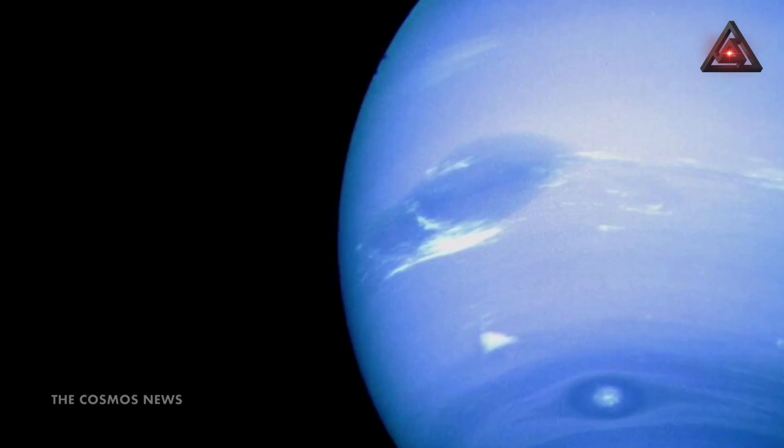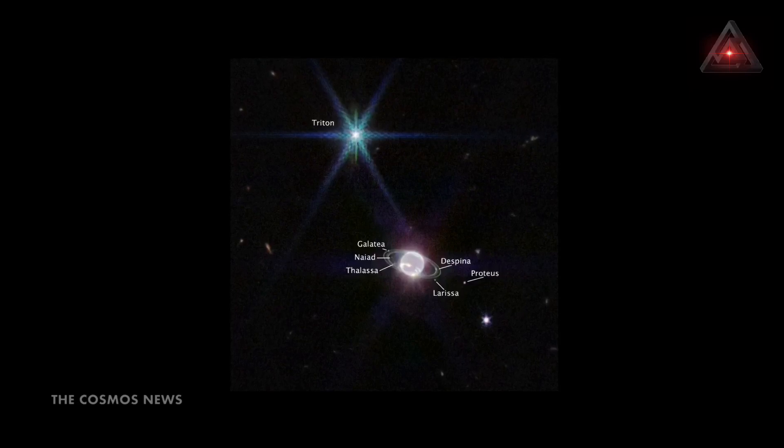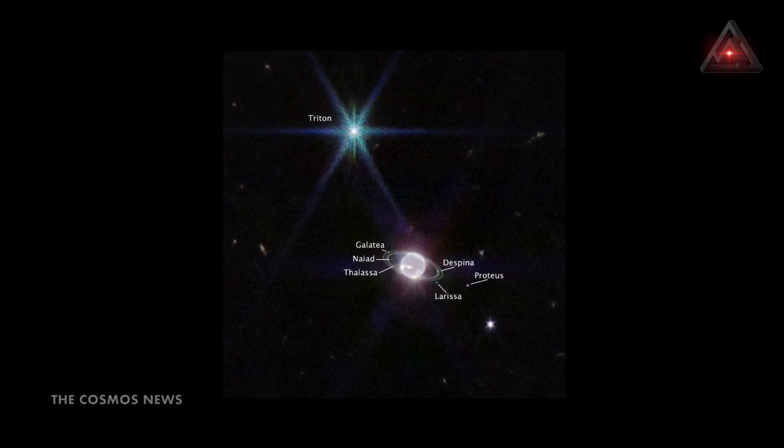This is readily apparent in Neptune's signature blue appearance in Hubble Space Telescope images at visible wavelengths, caused by small amounts of gaseous methane. Webb also captured seven of Neptune's 14 known moons.